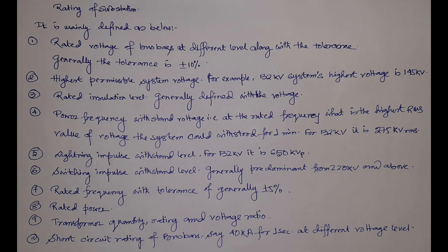Then there comes the highest permissible system voltage. For example, for a 132 kV system the highest permissible system voltage is 145 kV. For 6.6 kV it is 7.2 kV, for 11 kV it is 12 kV, and for 33 kV it is 36 kV. These are part of insulation coordination and Basic Insulation Level (BIL). I will make a separate video with a table showing the highest system voltage, lightning impulse voltage, etc. for different voltage levels.